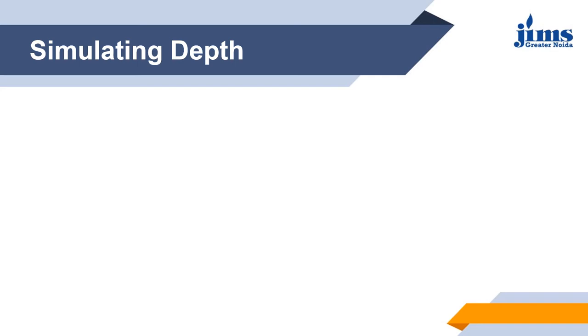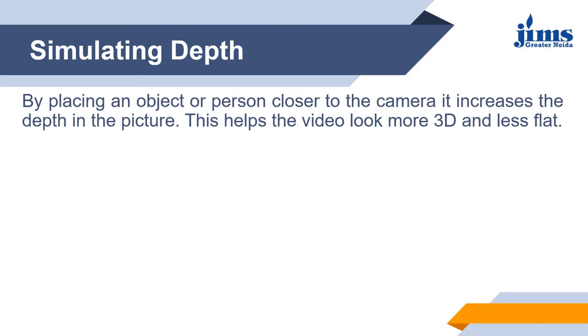Next is simulating depth. By placing an object or person closer to the camera, it increases the depth in the picture — this helps the video look more 3D and less flat. As we can see in the image, the object is placed closer to the camera, increasing the depth of the picture. The sculpture of three birds is creating depth in this image. Here is one more example for simulating depth.